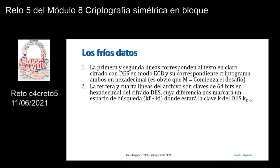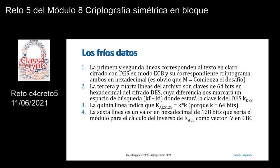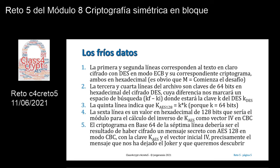Los fríos datos. La primera y segunda líneas corresponden al texto en claro, cifrado con el algoritmo DES en modo ECB y su correspondiente criptograma, ambos en hexadecimal. Con un conversor hexadecimal ASCII, es obvio encontrar que el mensaje M es el texto que ahí se indica.